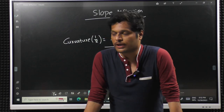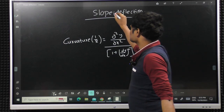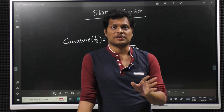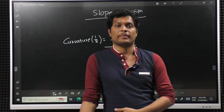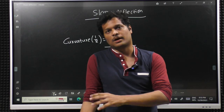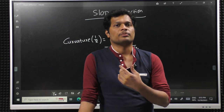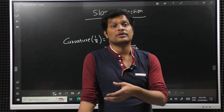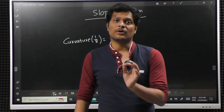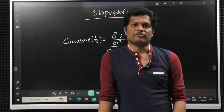The next topic in strength of materials is slope and deflection of a beam. Till now we have seen various types of stresses in the beam — simple stresses, complex stresses, stresses due to bending, twisting, and combination of bending and twisting. Now in this chapter, we will be seeing slope and deflection of a beam for every cross section.